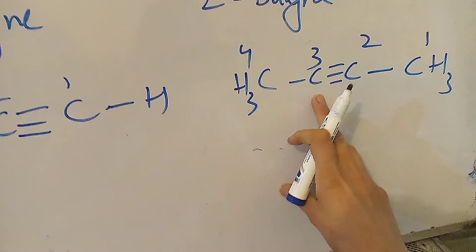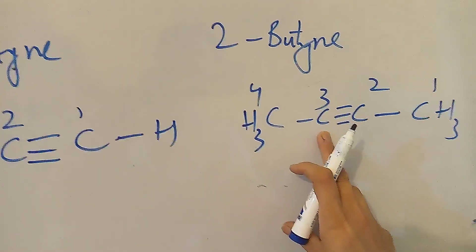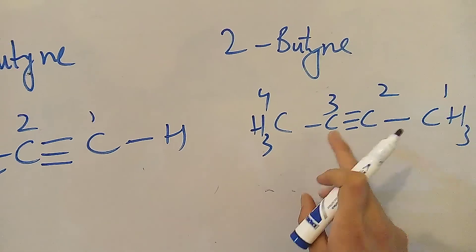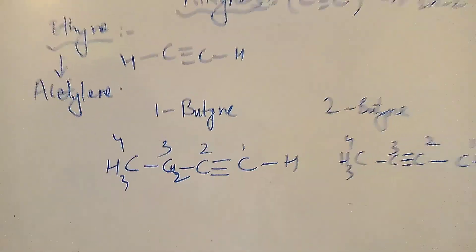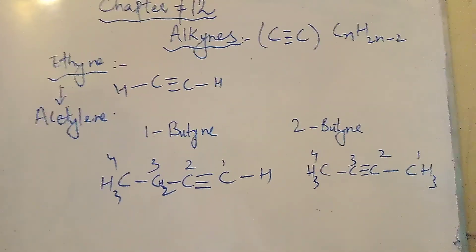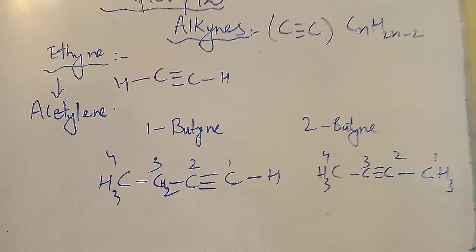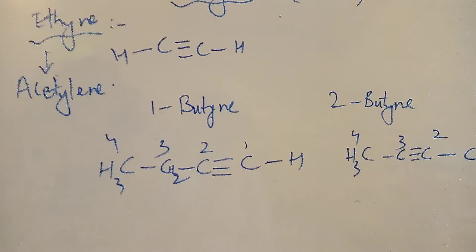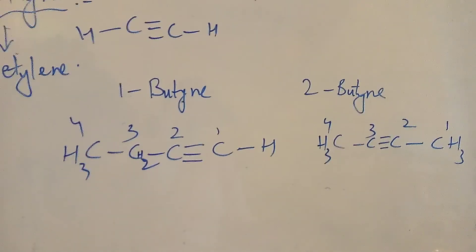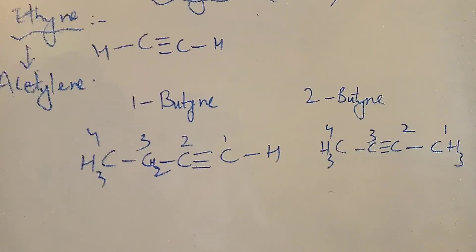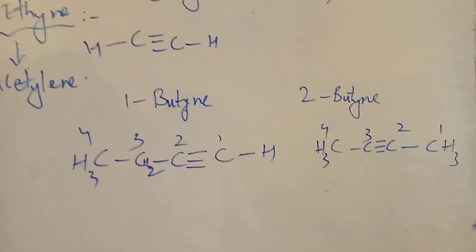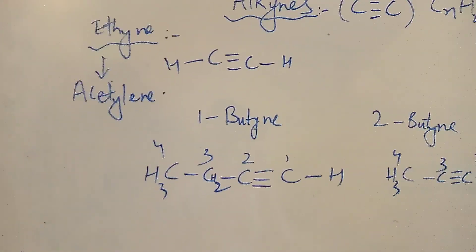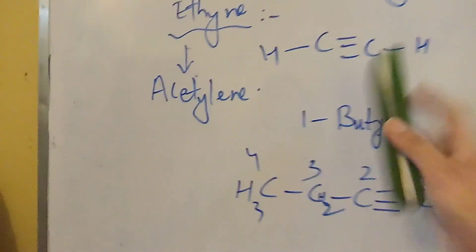Carbon always forms four bonds. So 1-butyne and 2-butyne are isomers of each other, because they have the same molecular formula but different positions of the triple bond. Now we will study the general methods of preparation of alkynes.